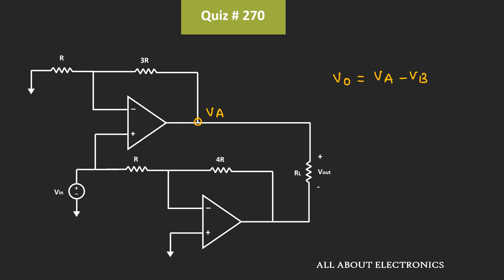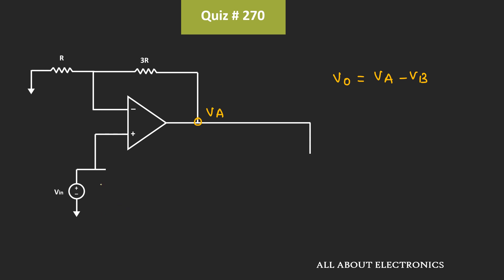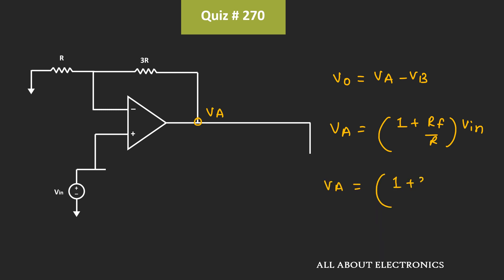If we consider this first op-amp, the input voltage is connected to the non-inverting terminal. For this configuration, Va can be given as (1 + Rf/R) times input voltage. Here Rf is equal to 3R while R is equal to R, so Va will be equal to (1 + 3R/R) times Vin, which gives Va equal to 4 times Vin.